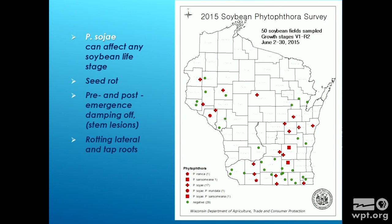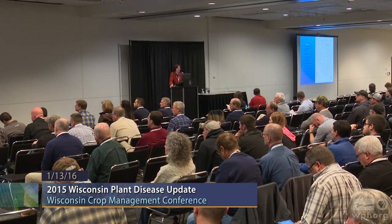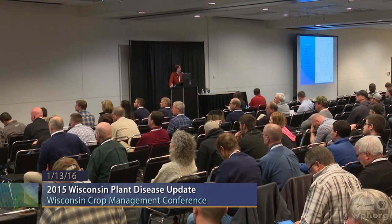Phytophthora sojae is the one we're used to — it's more common in Wisconsin. The red cross-hatches show the counties where we found this particular pathogen in 2015. Every year we sample about 15 soybean fields in the vegetative growth stages in June. But Phytophthora sojae can affect any life stage — it can cause seed rot, pre- or post-emergence damping off, stem lesions in reproductive stages, rotting lateral and tap roots, and very characteristic chocolate-colored lesions on the stem.